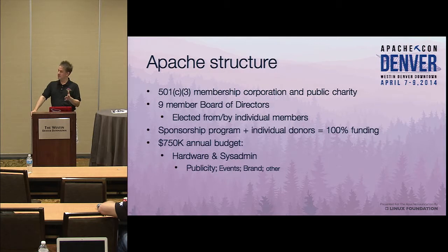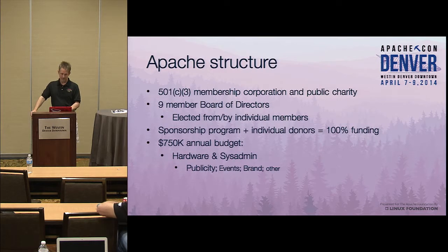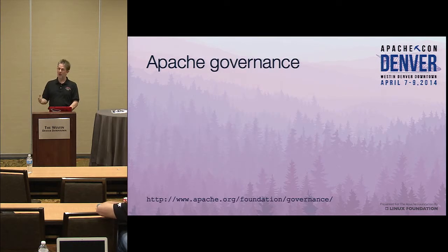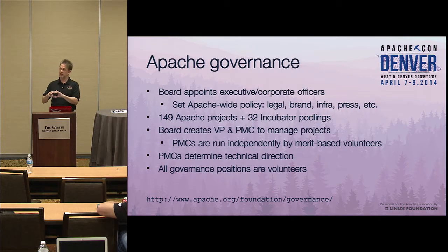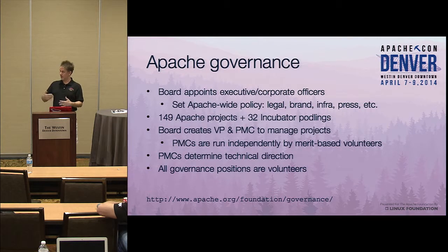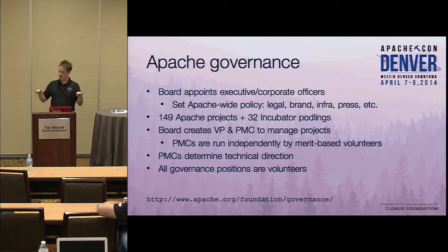That covers a $750,000 annual budget, approximately — mostly for hardware, contractors, publicity, events, and a few other things including brand. Governance is critical to how the foundation operates, both the foundation as a whole as well as all our project communities like Apache CloudStack. The board appoints executive officers and corporate officers like myself. We set policy for all projects — very core policy.